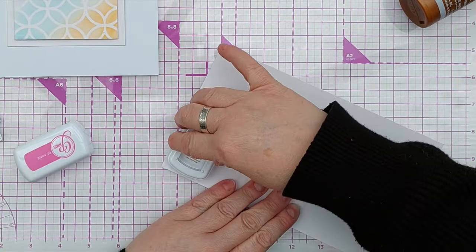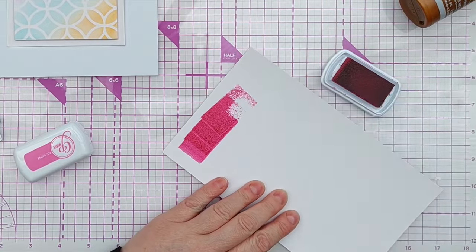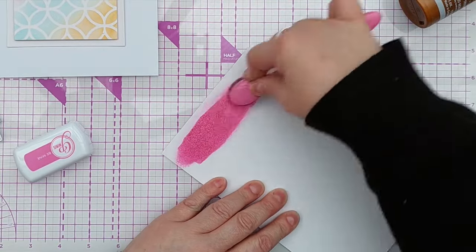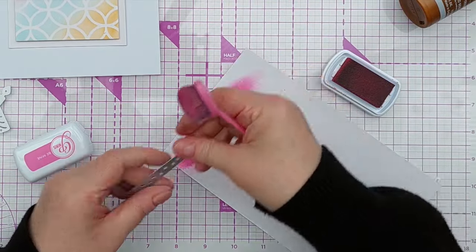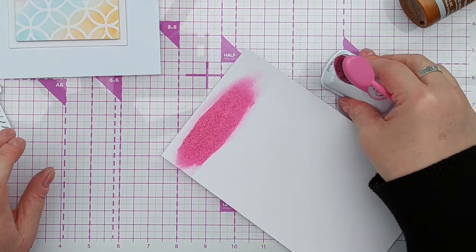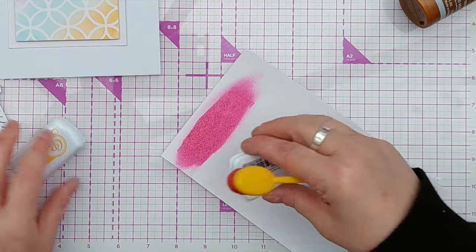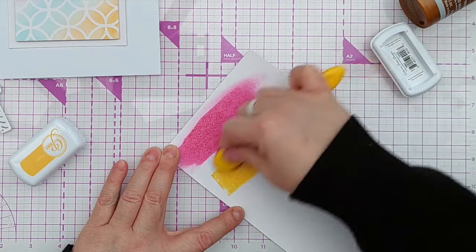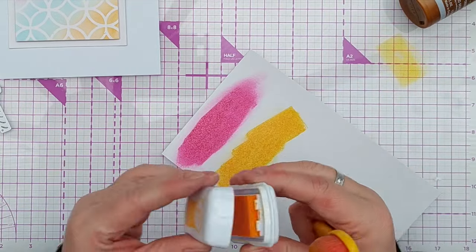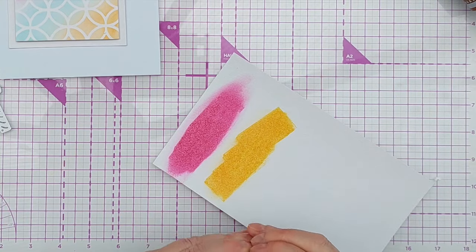Next, I took my three inks again and blended them onto some mixed media paper, and I went for a really intense color because I want the die cuts to really pop against that more muted subtle background.